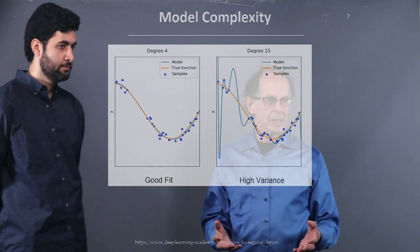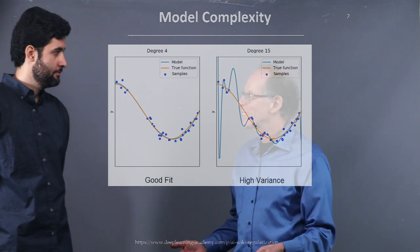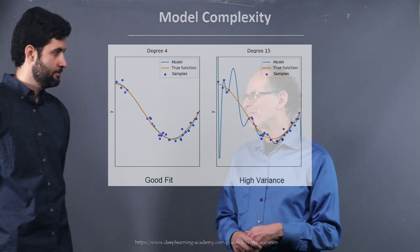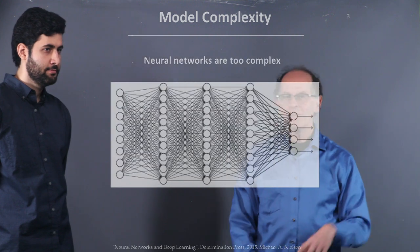And when we have neural networks, there is a tendency, especially at the beginning, to do polynomial 15. Too many parameters.